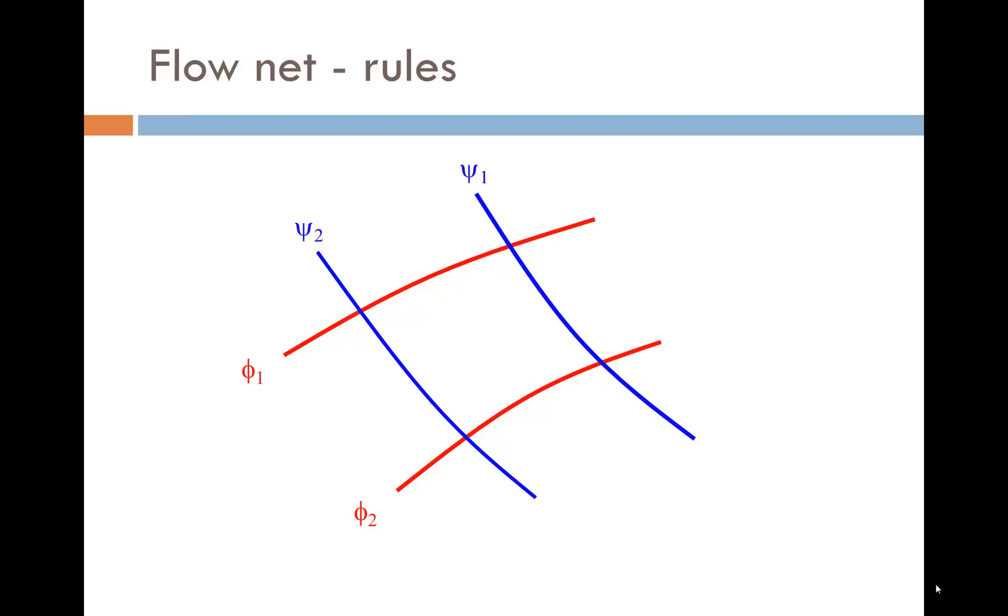When constructing flow nets, there are a few rules which must be obeyed. Number 1: Flow lines and equipotential lines must be at right angles to each other.